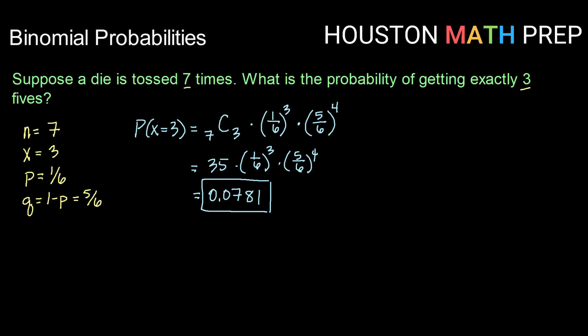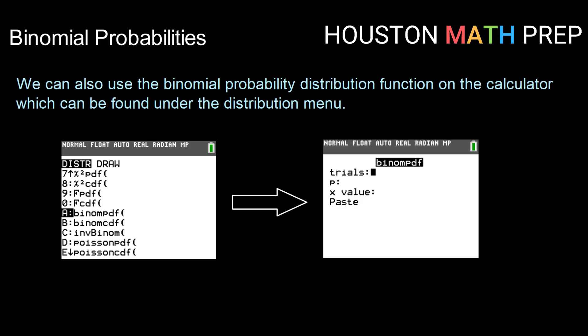Now, this formula can get a little crazy. You can also use a function in your calculator called the binomial probability distribution function, or shortened, binomial pdf. PDF means probability distribution function, and it's under the distribution menu.